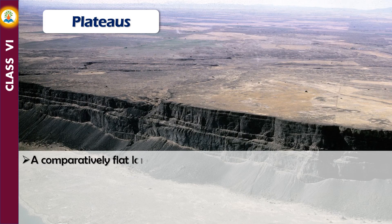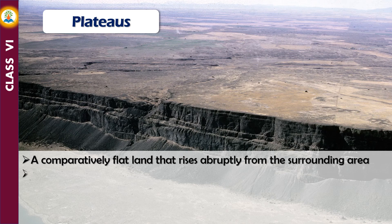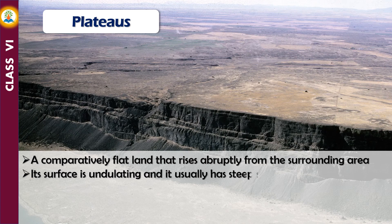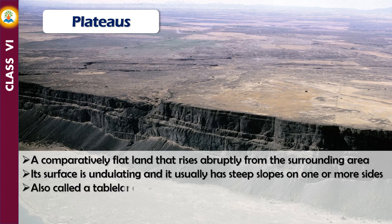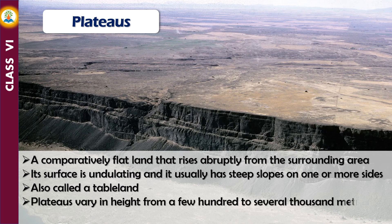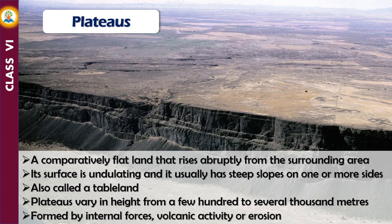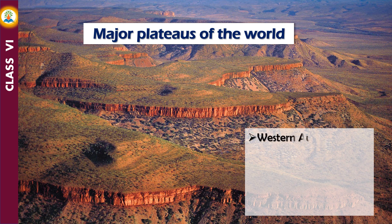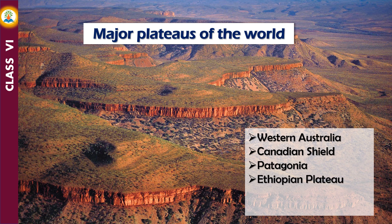A plateau is a comparatively flat land that rises abruptly from the surrounding area. Its surface is undulating and it usually has steep slopes on one or more sides — it is also called a tableland. Plateaus vary in height from a few hundred to several thousand meters and are formed by internal forces, volcanic activity, or erosion. Major plateaus of the world include Western Australia, the Canadian Shield, Patagonia, the Ethiopian Plateau, the Plateau of Iran, and the Deccan Plateau.